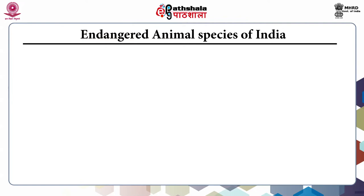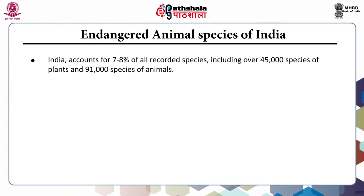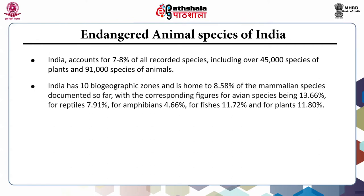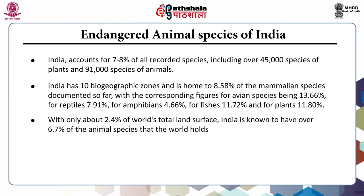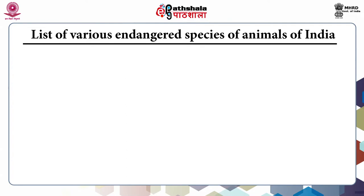Now vultures, which were very common thirty years back in the outskirts of villages in northern Indian states, are at the verge of extinction and are under the category of rare or threatened species. India accounts for seven to eight percent of all recorded species, including over forty-five thousand species of plants and ninety-one thousand species of animals. India has ten biogeographic zones and is home to 8.58% of the mammalian species documented so far, with avian species at 13.66%, reptiles at 7.91%, amphibians at 4.66%, fishes at 11.72%, and plants at 11.80%. With only about two percent of the world's total land surface, India is known to have over 6.7% of the animal species that the world holds.